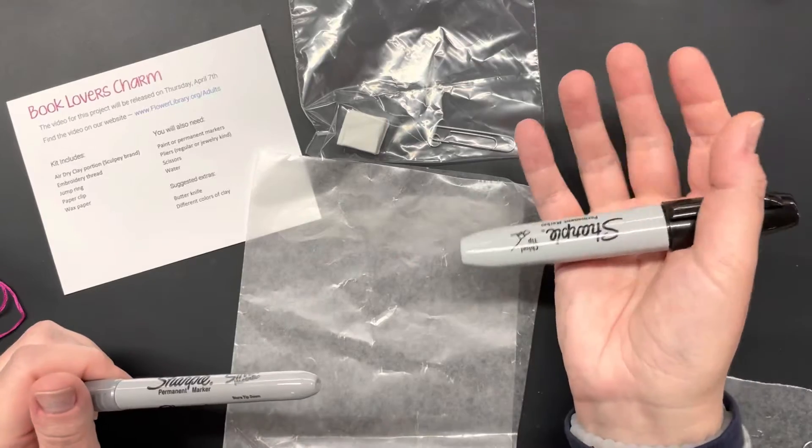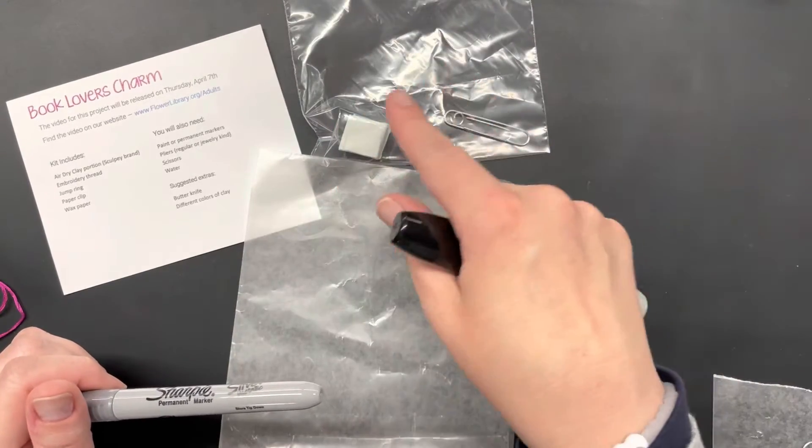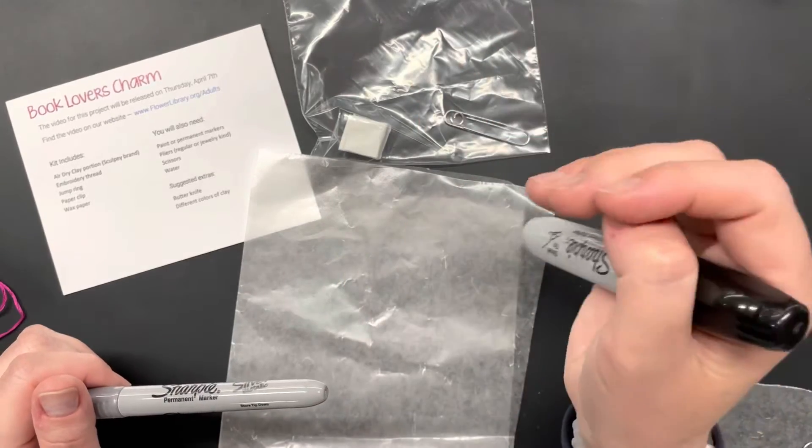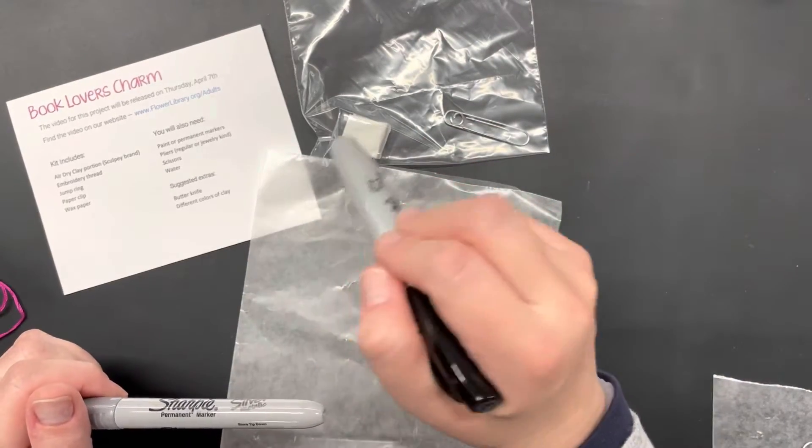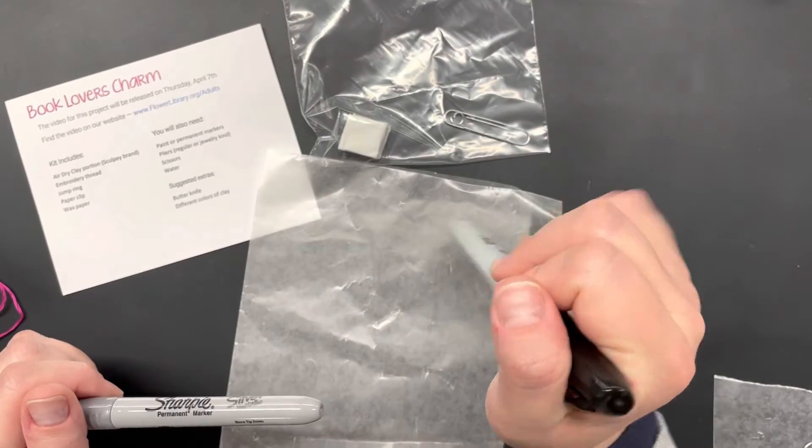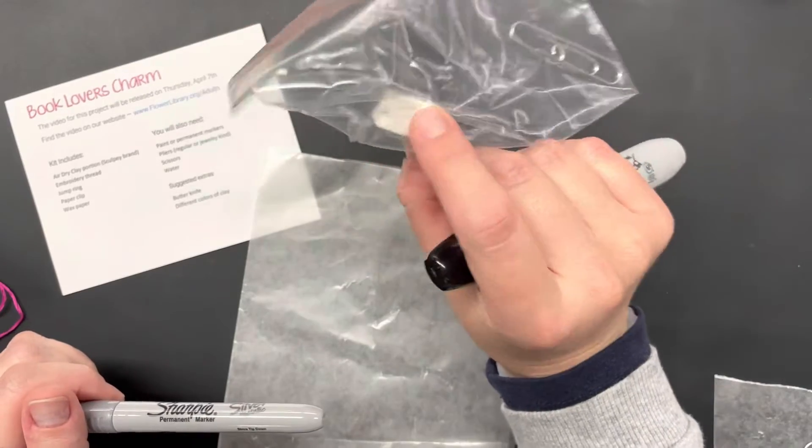Other extras would be a butter knife to help cut your small portion into smaller sections. And they sell Sculpey clay, the air dry version, in a variety of colors. So if you're not interested in white or making something different, definitely keep that in mind.